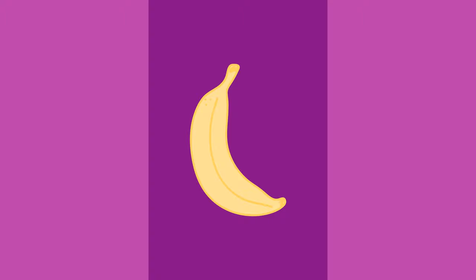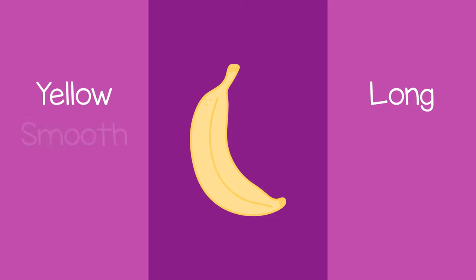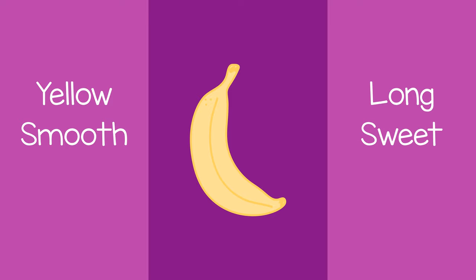You might say, this banana is yellow. Your child might say, the banana is long. You could say, it's smooth. They might say, it's sweet. You could also say, the banana is curved. Then they might say, it's tasty.